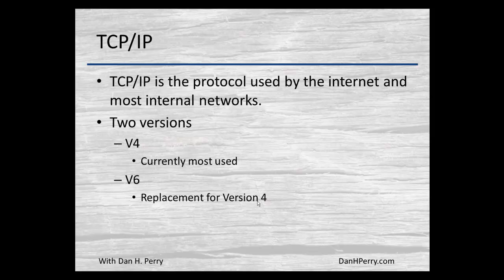Now what is TCP IP? It is a protocol used in the internet and most other networks today. There are currently two versions of TCP IP. Version 4 is what's most currently used — well over 95% of the internet uses version 4. Version 6 is a replacement for version 4, and as more and more users' devices get on the internet, we're going to have to move to version 6 to allow for additional addressing.